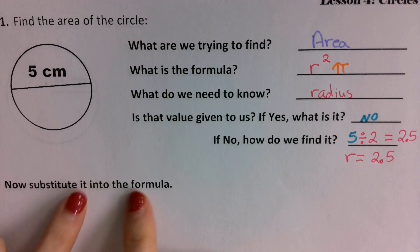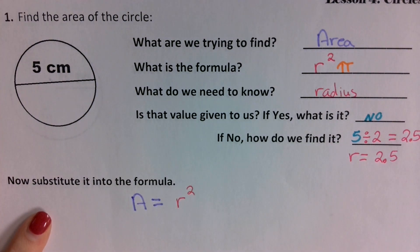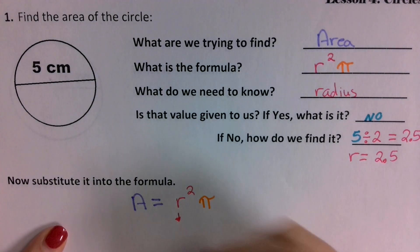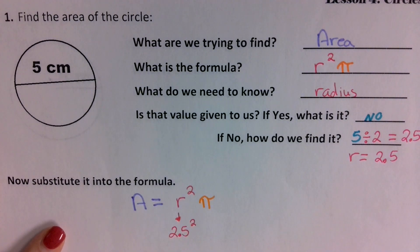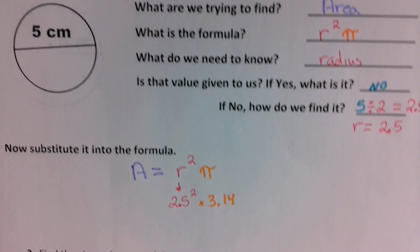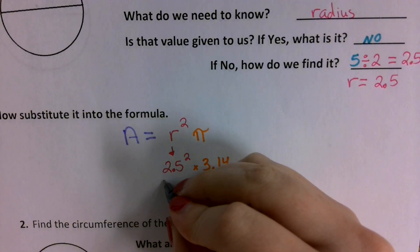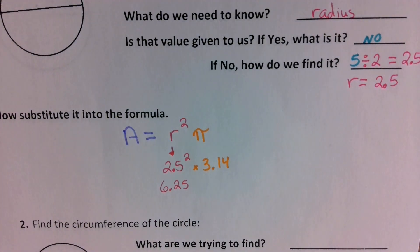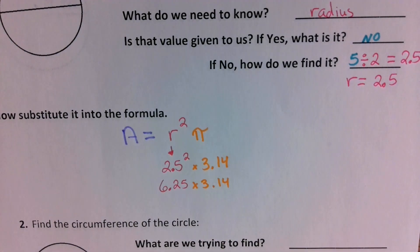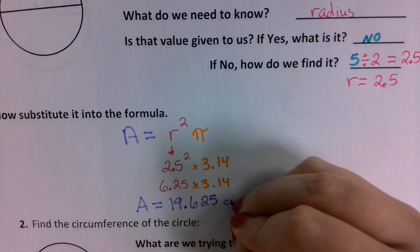Now all we have to do is substitute it into our formula. Area equals r squared times pi — we're going to replace r with 2.5, so we're going to do 2.5 squared, then multiply that by 3.14. We have to do 2.5 squared first — 2.5 times 2.5 comes out to 6.25. Then you multiply it by 3.14. Our area is 19.625, and that's centimeters squared.